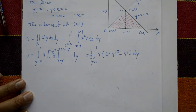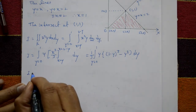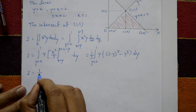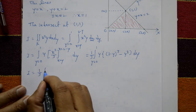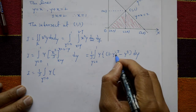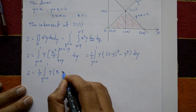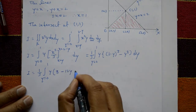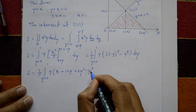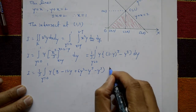Now expand using (a minus b) cubed. So 1/3 times the integral from y equals 0 to 1 of y times [(2 minus y) cubed expanded as 8 minus 12y plus 6y squared minus y cubed] minus y cubed, with respect to y.